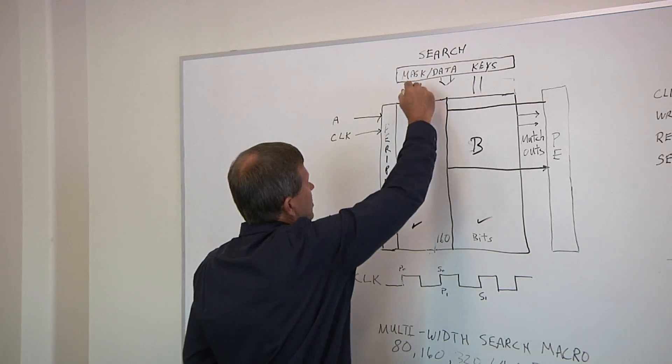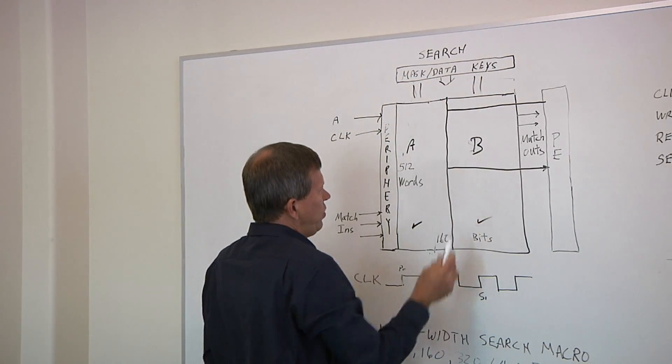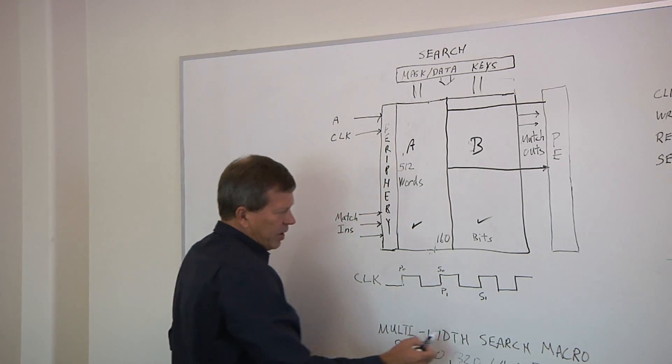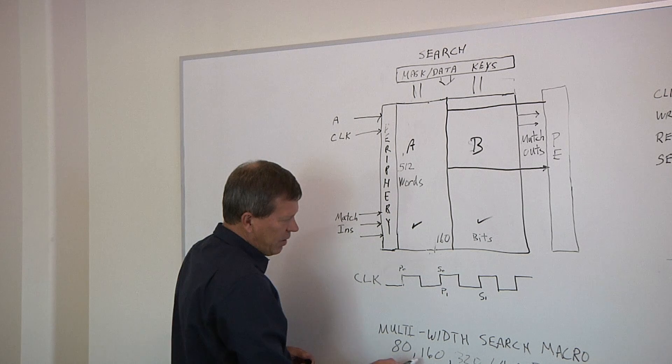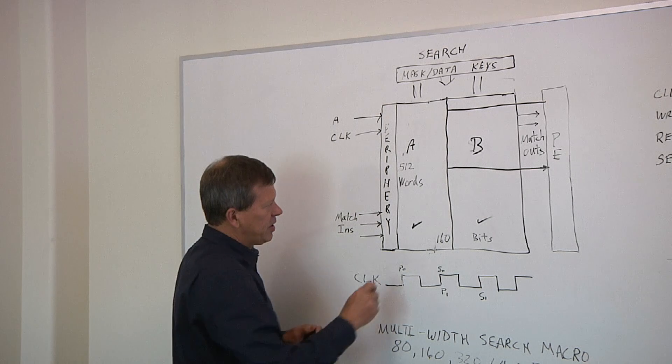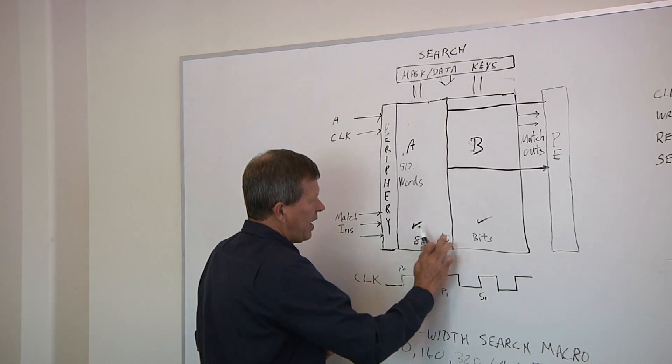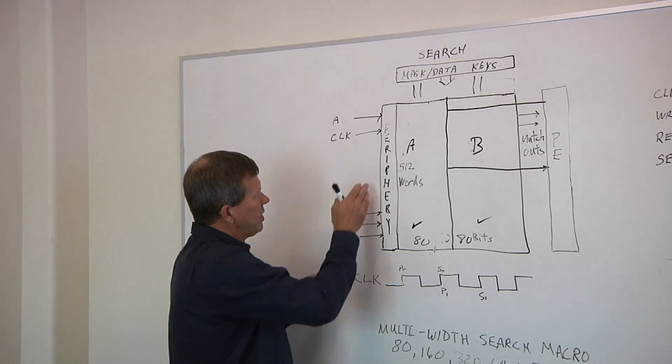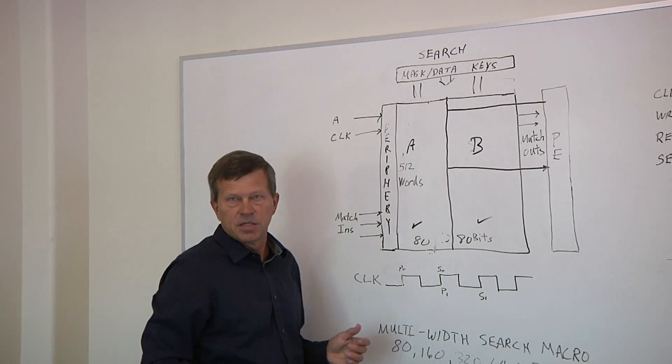This particular architecture has two independent TCAMs and two independent search keys. And this is very useful when you have multi-width search macros where you want 80, 160, 320, or 640-bit keys. And in this particular case, you end up with two 80-bit independent TCAMs sharing one set of periphery. That's how we realize the savings in area.